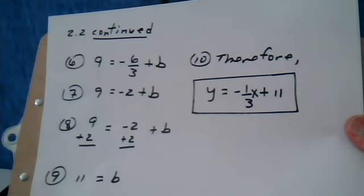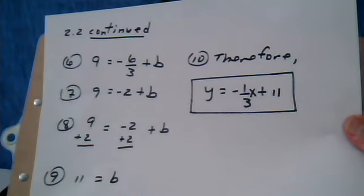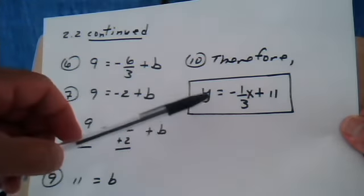Therefore, the line that's perpendicular to the one that they gave us, and going through the point that they gave us, is this one. This is the equation of that line.